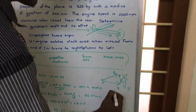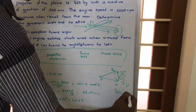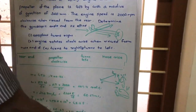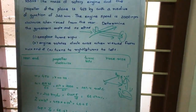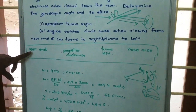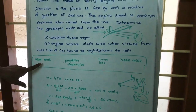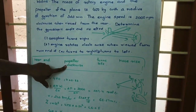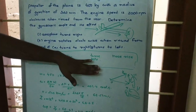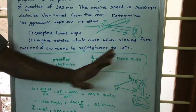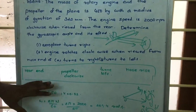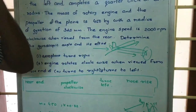That means the reaction acting on the plane causes the tail to dip and the nose to rise. Simply put: if we are looking from the rear end, the propeller is rotating clockwise, and the plane turns left, then the nose will rise and the tail will dip. We can use this particular table to find any answer.